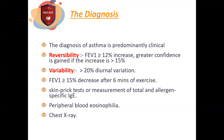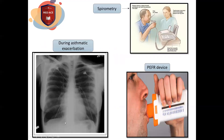Chest X-ray is usually normal in asthma. During an exacerbation, it may show hyperinflation of the lungs. We use it to exclude chest infections and pneumothorax, which may be a complication. Hyperinflation is identified by flattening of the domes of the diaphragm, with more than 10 posterior ribs visible above the diaphragm — in this case, 11 ribs are visible.